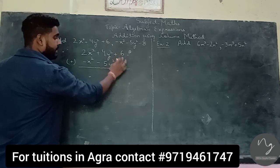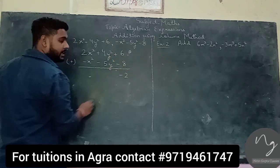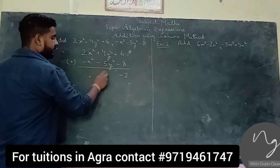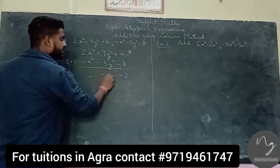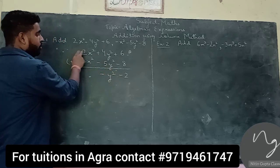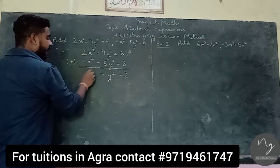6 minus 1, the answer is 5. 4 minus 5, the answer is minus y squared. 2 minus 1, the answer is x squared.